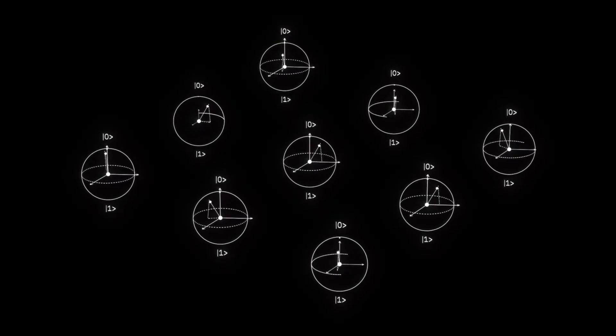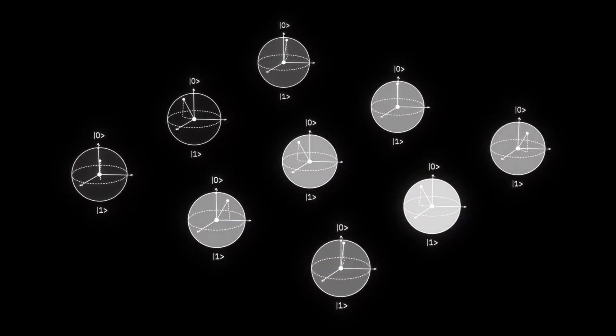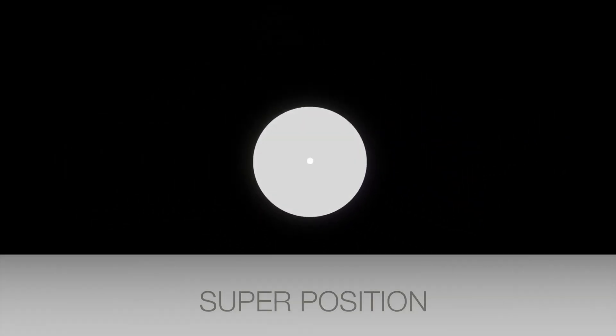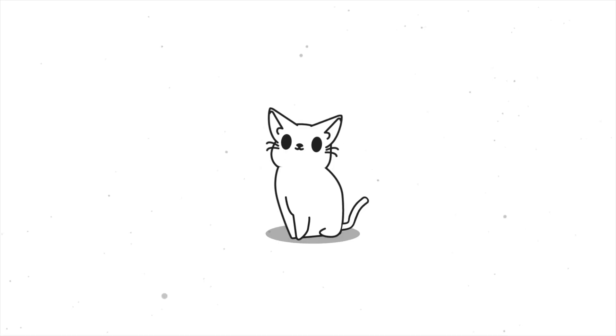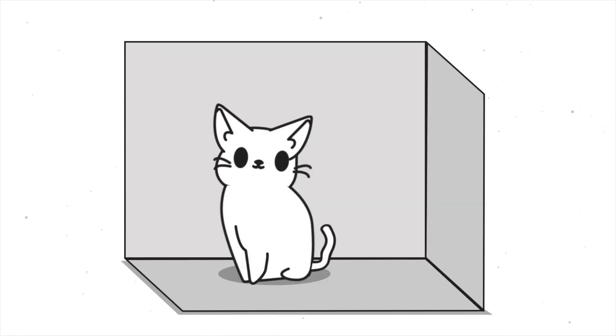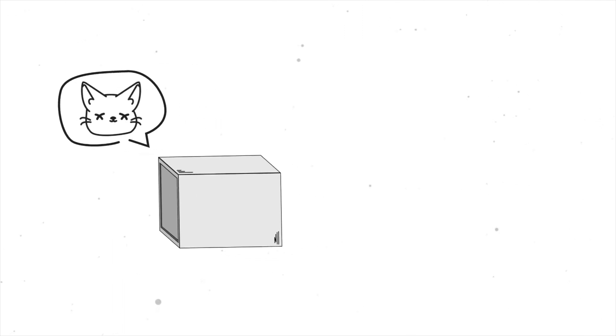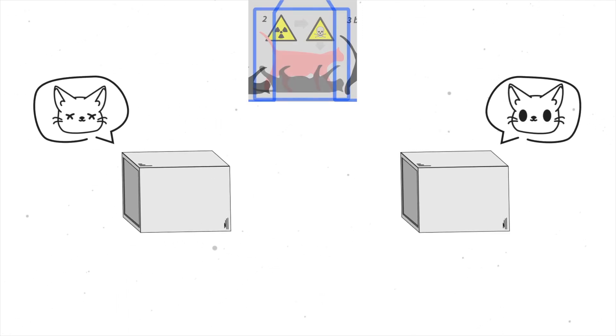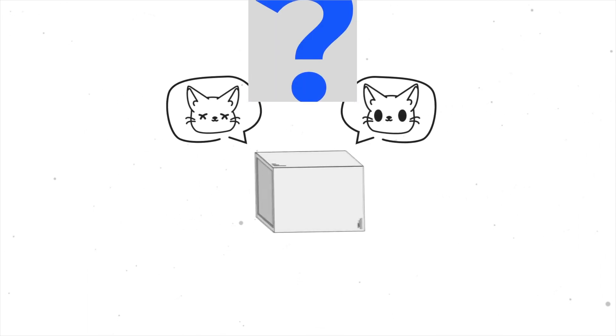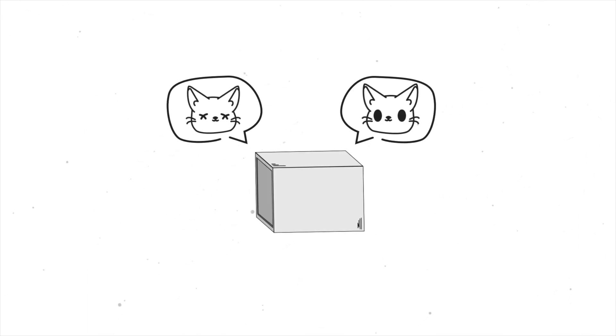This mind-bending phenomenon where an object can be in multiple states at once is called superposition. To put it into perspective, it's like Schrödinger's famous thought experiment — Schrödinger's cat. An imaginary cat placed inside a box with a poison can be both alive and dead. We can't know its state until we open the box.